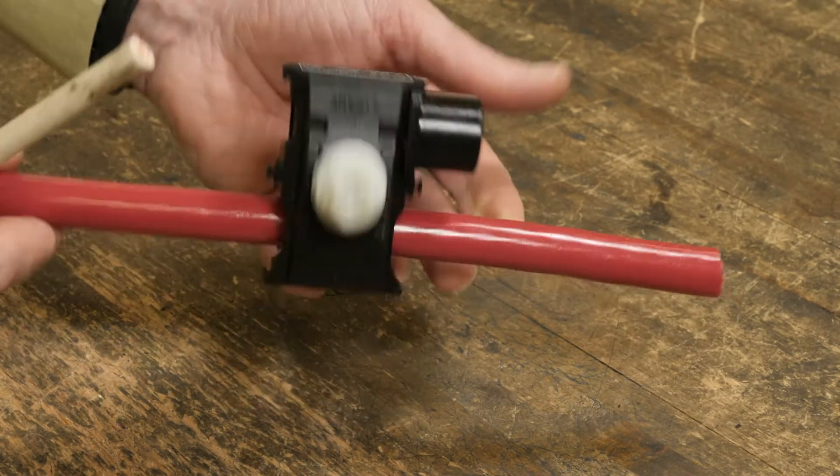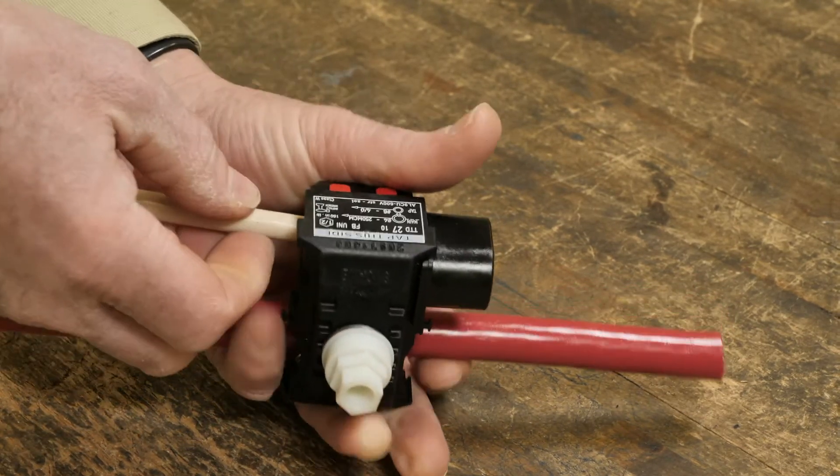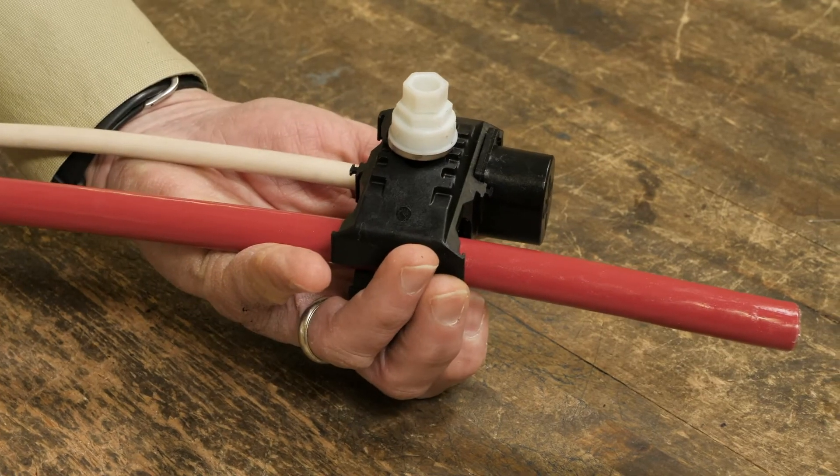Measure the tap conductor so that it will be fully inserted into the end cap seal. Insert the end of the connector into the tap side opening until it is fully seated.